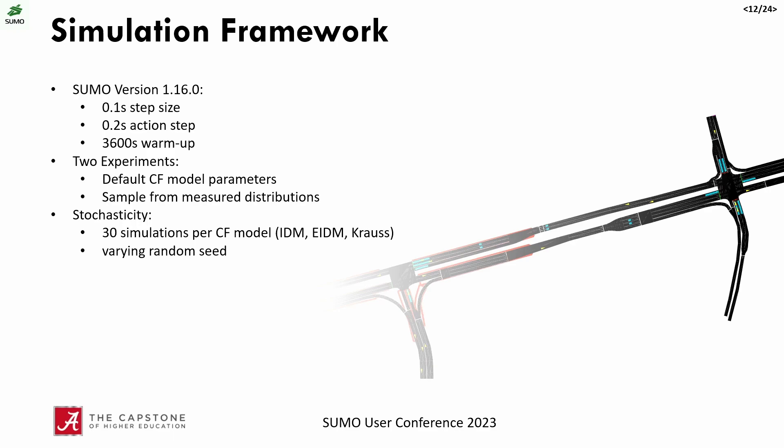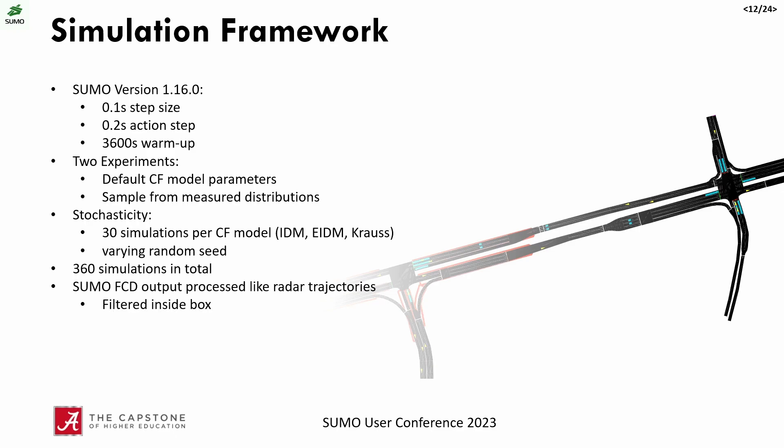For the simulation work, we used SUMO version 1.16 with a 0.1-second step size, 0.2-second action step, and an hour-long warm-up period. There are two experiments: one with default car-following model parameters, and one sampled from measured distributions that we then reprocess to compare to real-world measurements. For stochasticity, we ran 30 simulations per car-following model with varying random seeds, as well as sampling with varying random seeds from the distribution. There were 360 simulations in total, and the SUMO FCD output was processed like the radar trajectories and filtered using the same exact box, mapping geo-coordinates to SUMO coordinates.